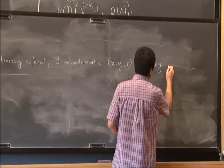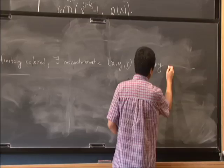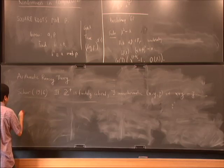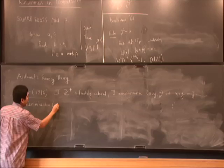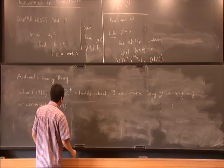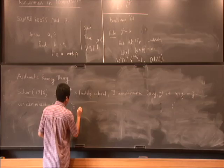And another classic result of Ramsey theory is van der Waerden in 1927. If the integers are finitely colored, then we can always find a monochromatic arithmetic progression of length K.